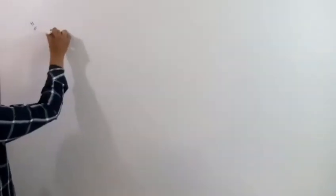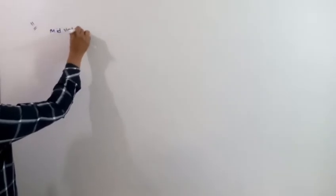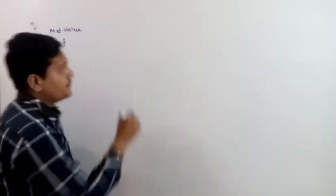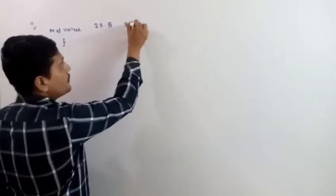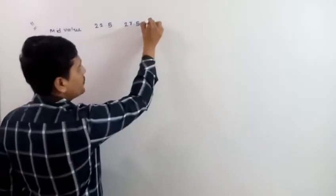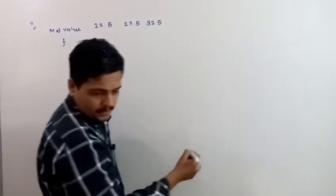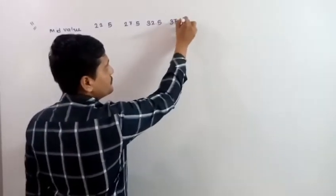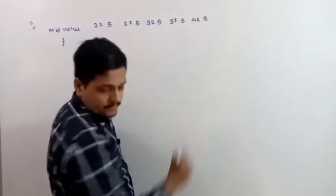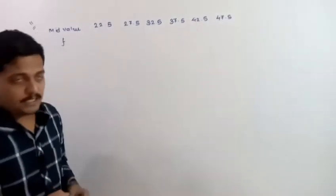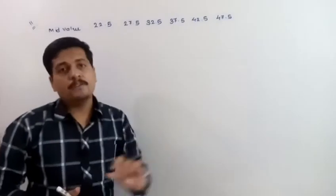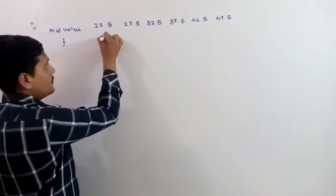Let's start. So here we have mid values given: 22.5, 27.5, 32.5, 37.5, 42.5 and 47.5. Now let's see what the mid values are and what classes we need to find. The frequency is 25.